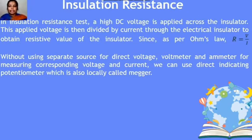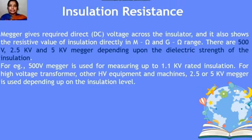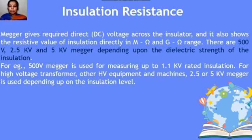A megger applies a direct DC voltage across the insulator, where the resistive value ranges from megaohms to gigaohms. There are many types of meggers available: 500 V megger, 2.4 kV megger, and 5 kV megger, depending upon the dielectric strength of the material being tested. For example, a 500 V megger is used for measuring up to 1.1 kV rated insulation, while 2.3 or 5 kV meggers are used for high voltage transformers and other HV equipment.